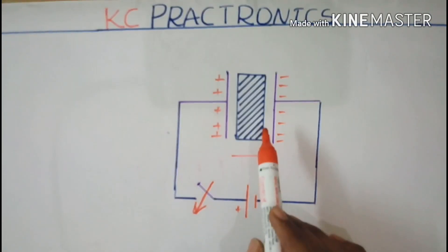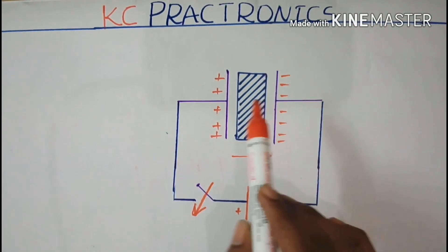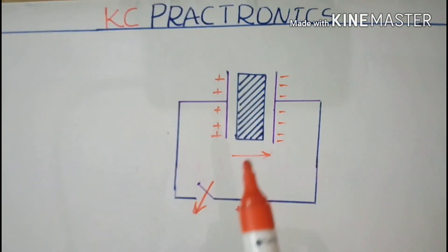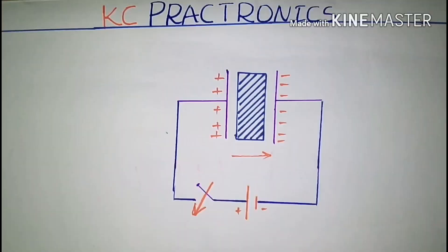Due to the positive and negative charge, an electric field is developed across the capacitor. Hence, the voltage source is stored as electrical field across the capacitor.